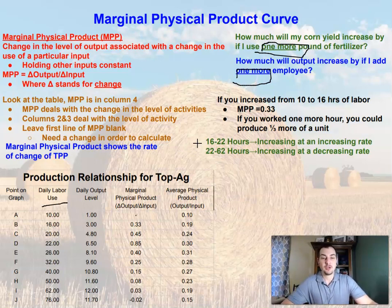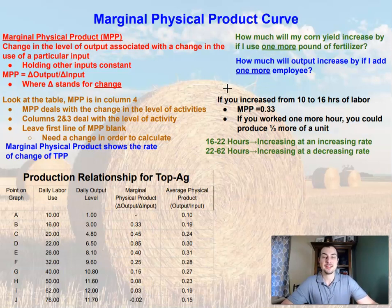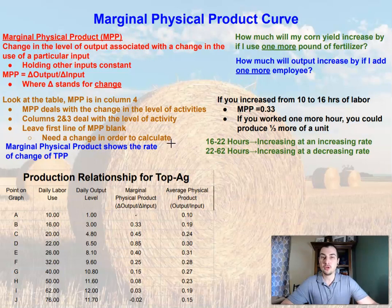As we go from 16 to 22 hours, we are increasing at an increasing rate. From 22 to 62 hours, total physical product is still increasing but at a decreasing rate. When dealing with marginal physical product, it's about the change in output per unit of input. The one question you should always ask is: how much would one more unit of input get me? That is marginal physical product — how much would one more unit of input get me in terms of output?